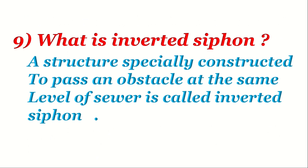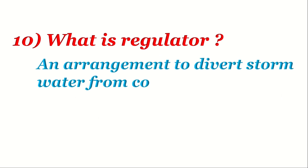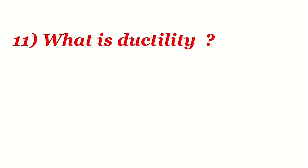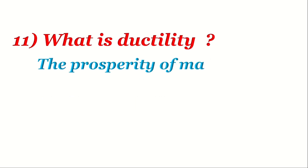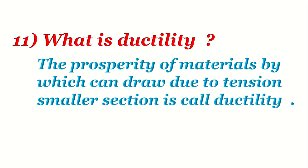Question 9: What is an inverted siphon? A structure specially constructed to pass an obstacle at the same level of a sewer is called an inverted siphon. Question 10: What is a regulator? An arrangement to divert stormwater from a combined sewer is called a regulator. Question 11: What is ductility? The property of a material by which it can be drawn into a smaller section due to tension is called ductility.